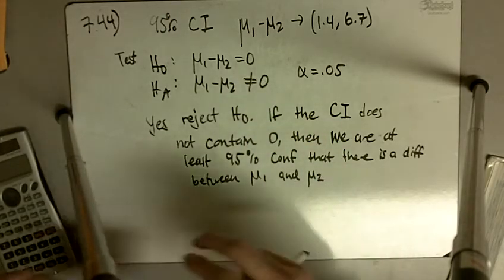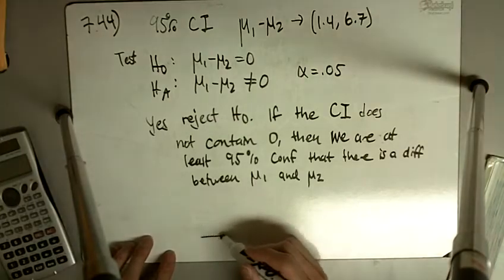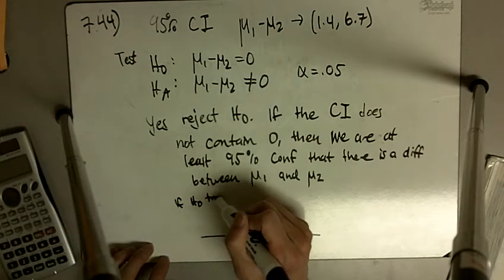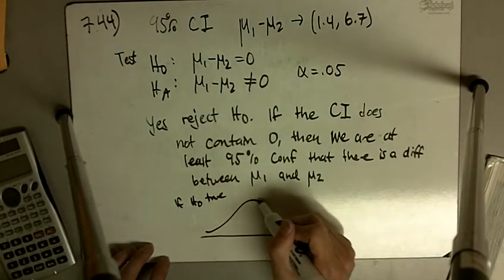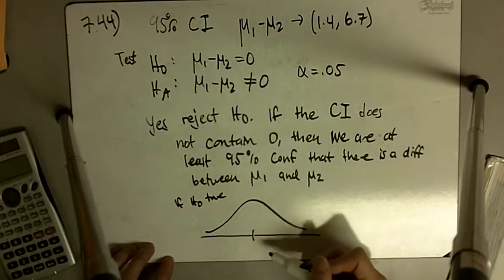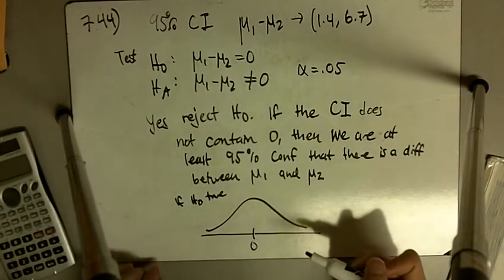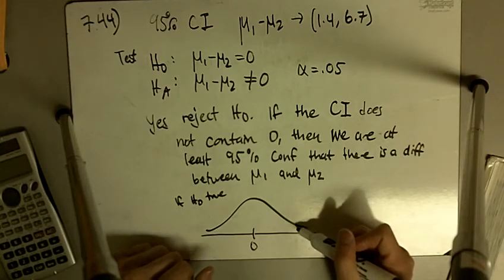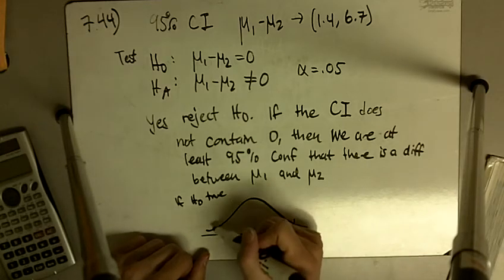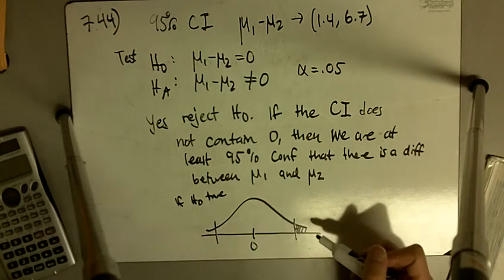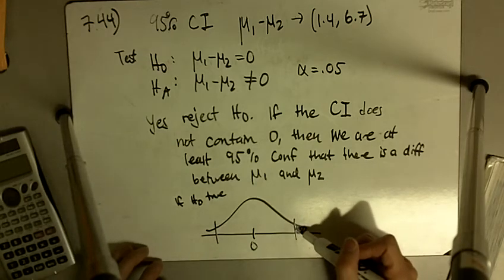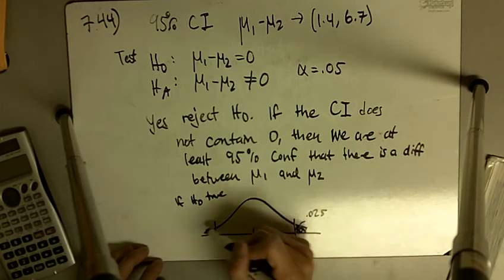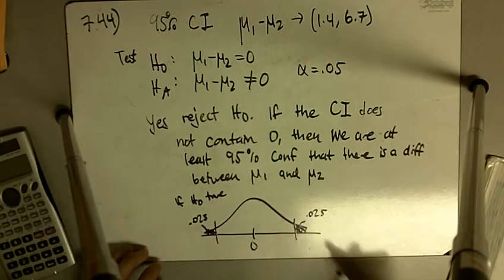And if you're having trouble thinking about this, you can think that if the null hypothesis were true, if H₀ were true, then all of our differences would be centered around 0, and we would only reject something if it falls outside of this range, outside of this, in our tails here, and there's a 0.025 chance of being in the tails.